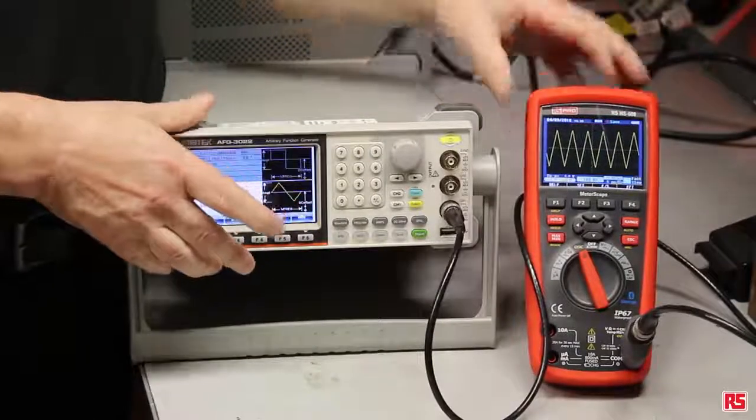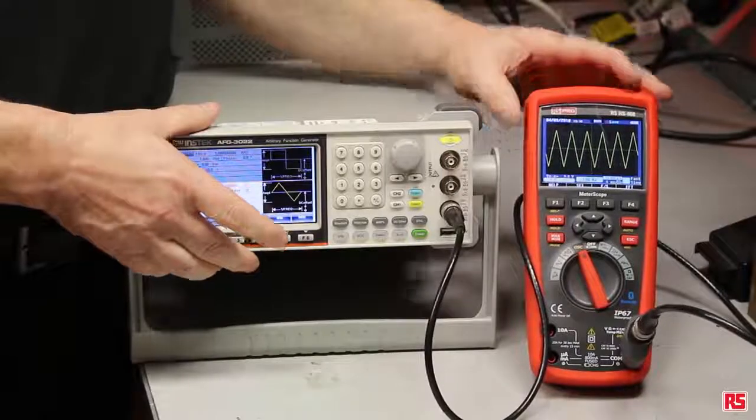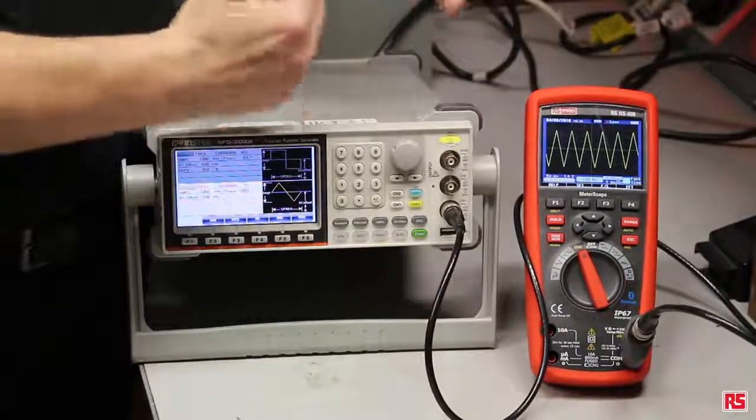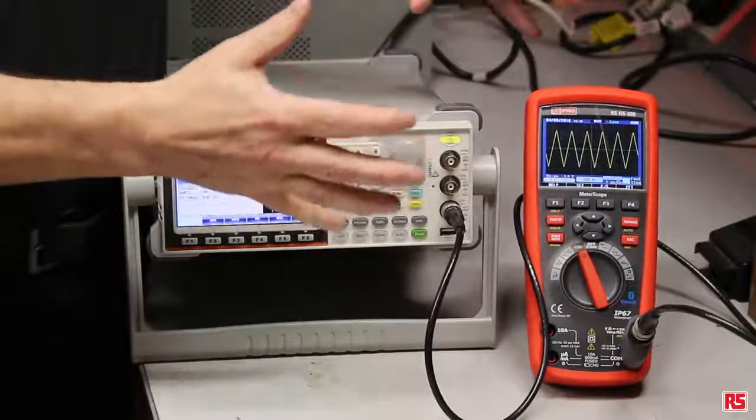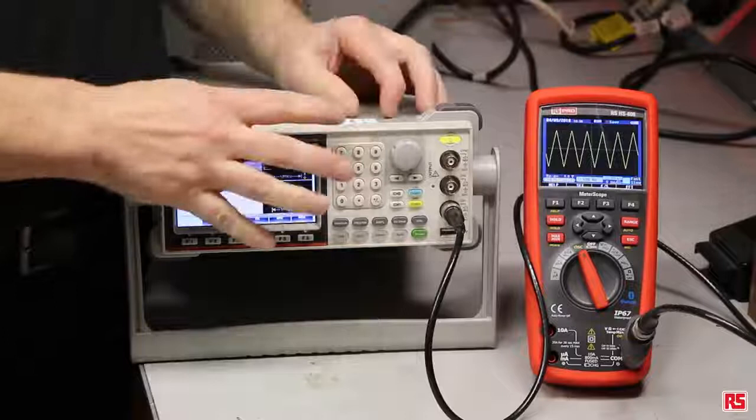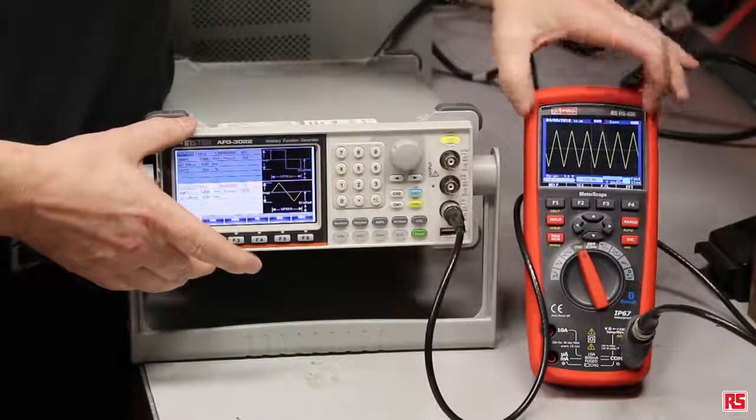So there are a few other things you can do on here. You can measure the noise, you can measure the harmonic rate as well. So you can look at the different harmonics within the waveform, something quite detailed like that on a digital multimeter.